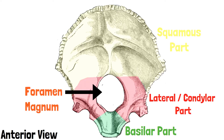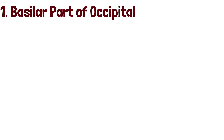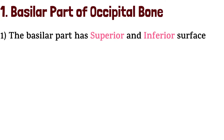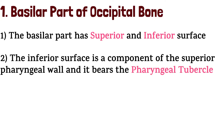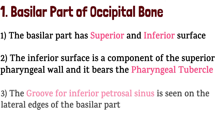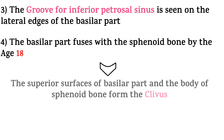We will discuss each of these parts separately and see what anatomical features they possess. Starting with the basilar part: it has superior and inferior surfaces. The inferior surface is a component of the superior pharyngeal wall and it bears the pharyngeal tubercle. The groove for the inferior petrosal sinus is seen on the lateral edges of the basilar part. The basilar part fuses with the sphenoid bone by the age of 18.